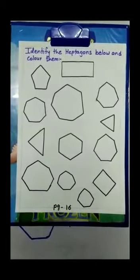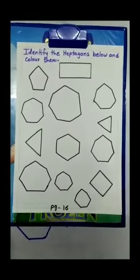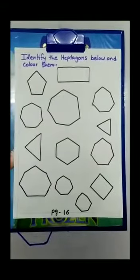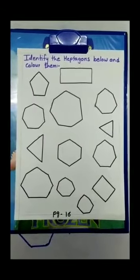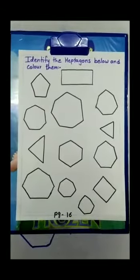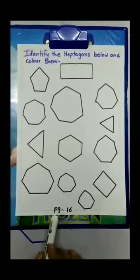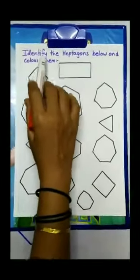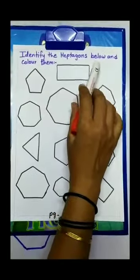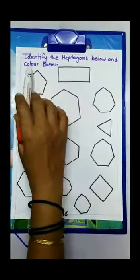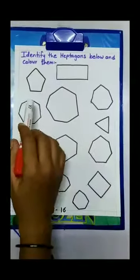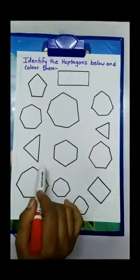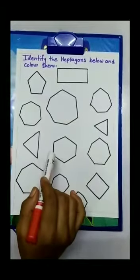Hello kids, this is Neha Mish from Twinkling Kids preschool and today we are going to do a concept workbook page number 16. That is, identify the heptagons below and color them. You have to identify the heptagon shape and color them.